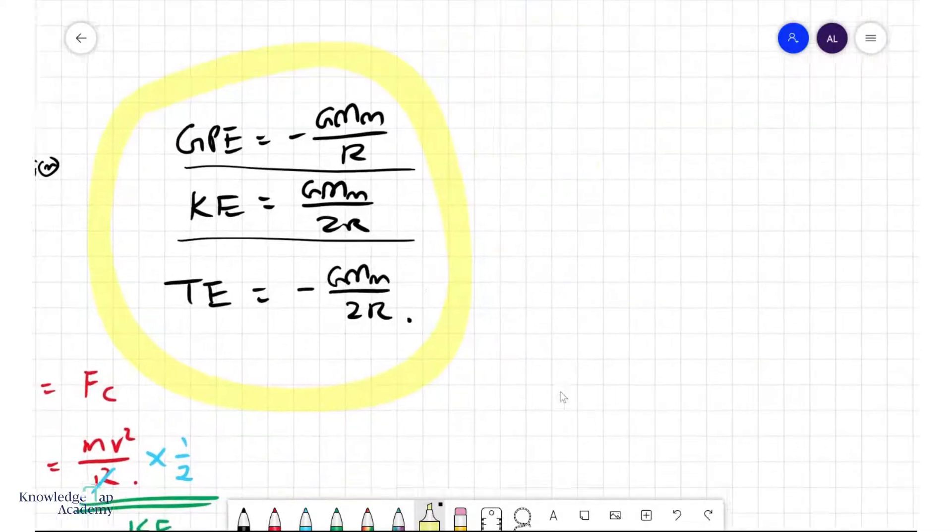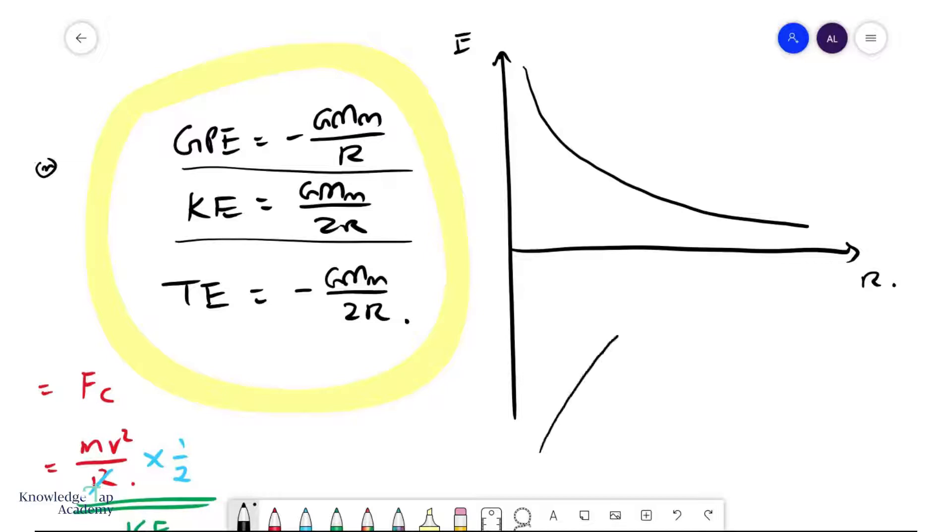Now, so this also implies that if I plot these energies on a graph, so let's do an energy r graph, your KE will look something like that, and your total energy would be a mirror image of it, of the r axis, right? So that's your KE, that's your KE.